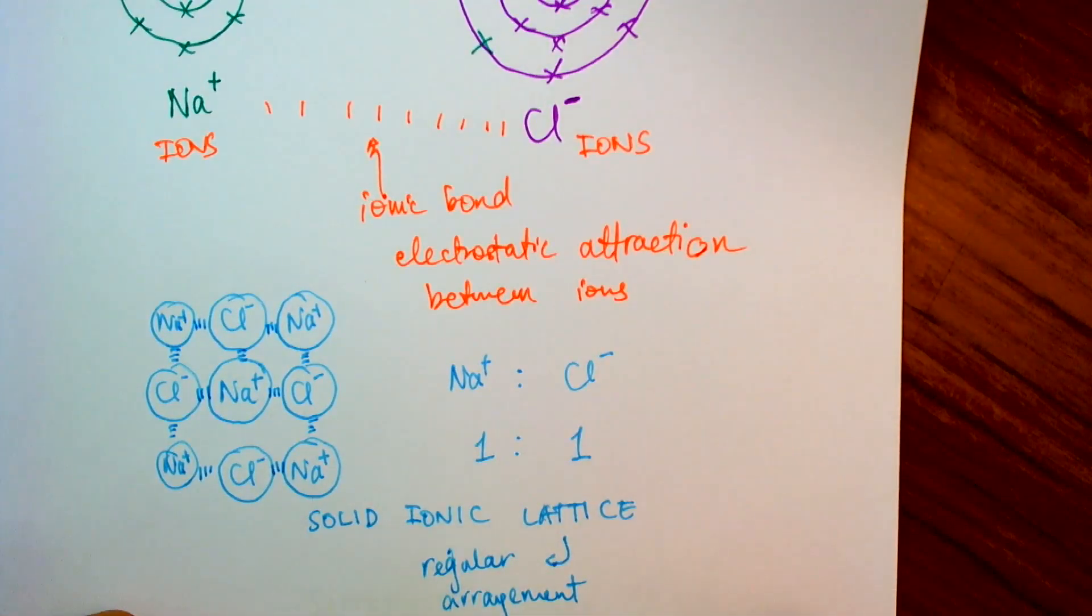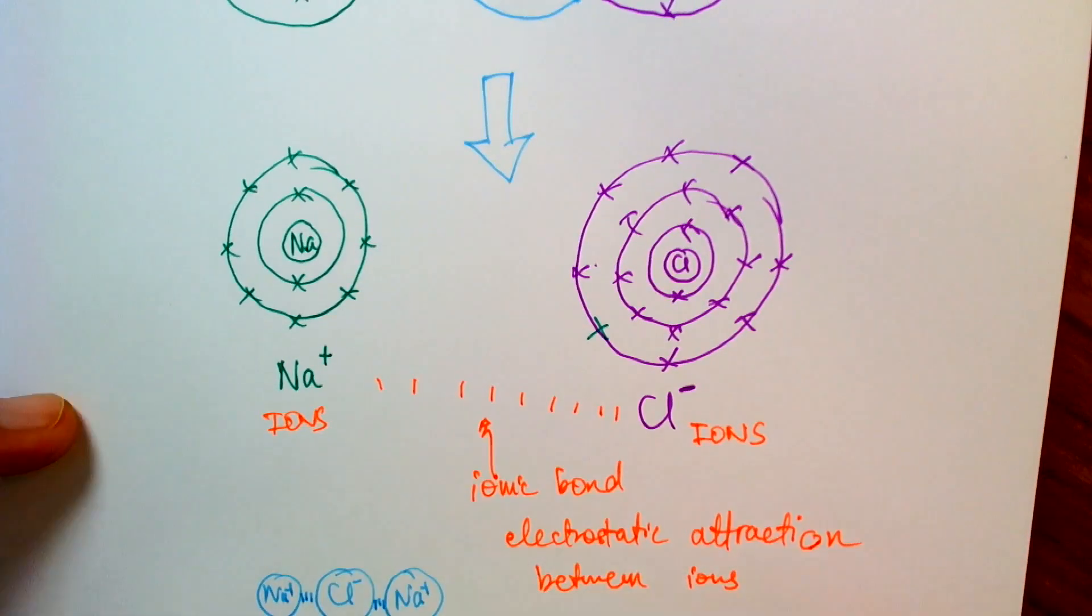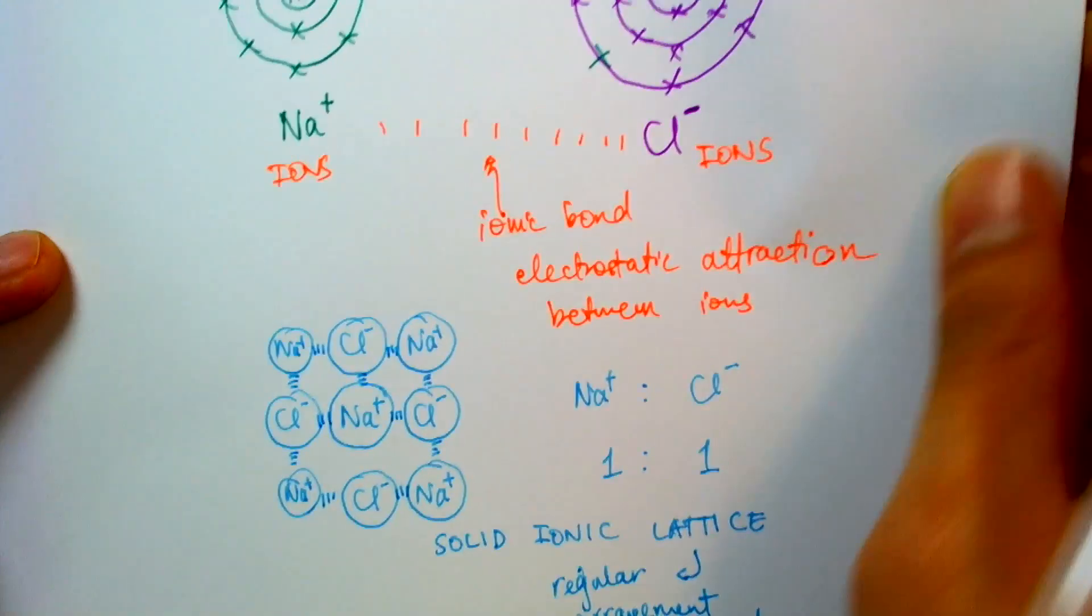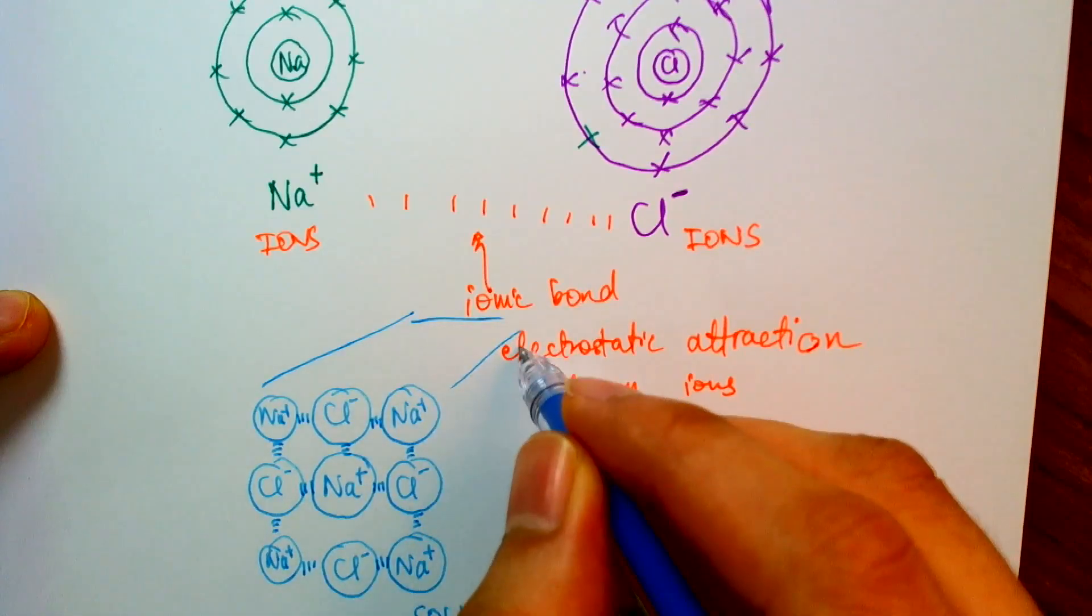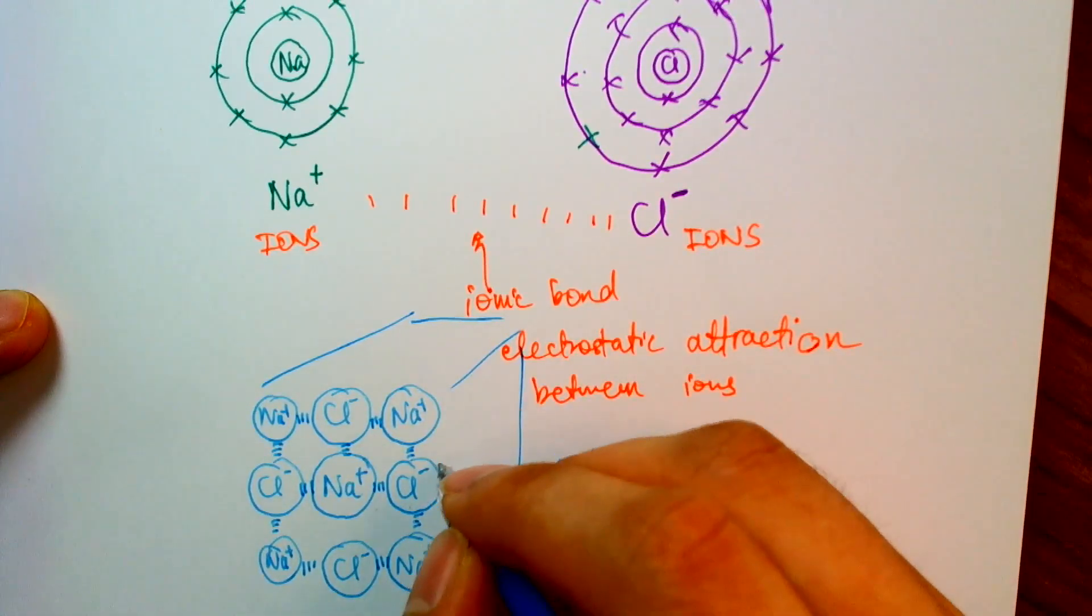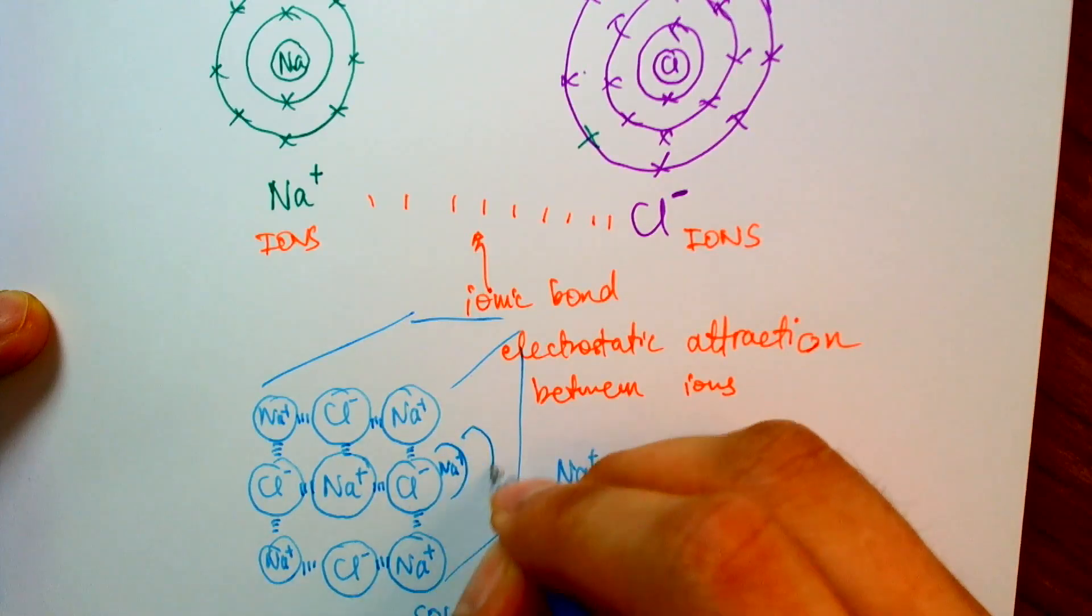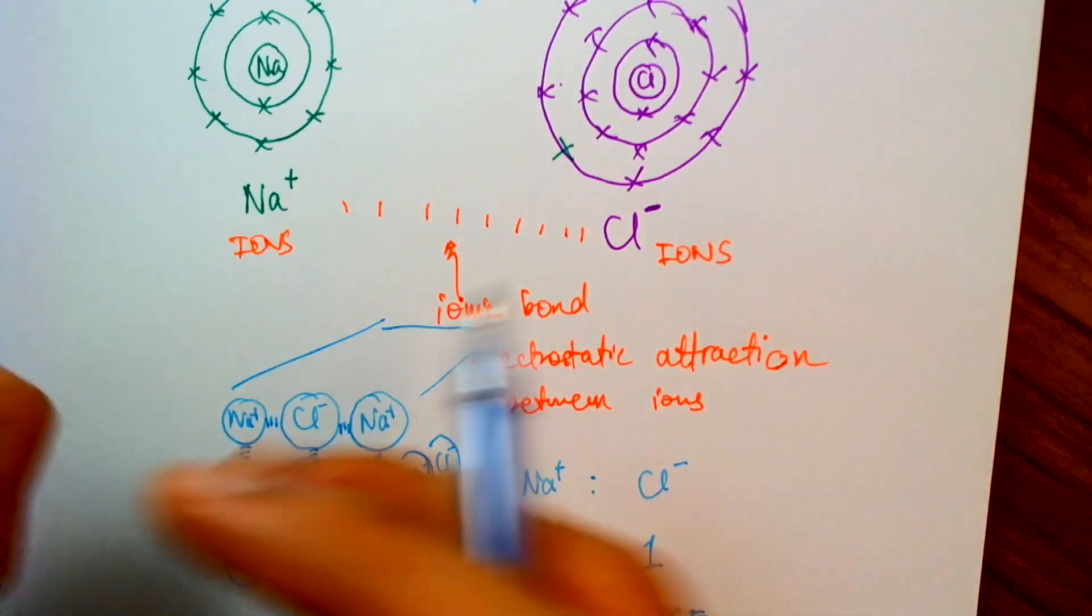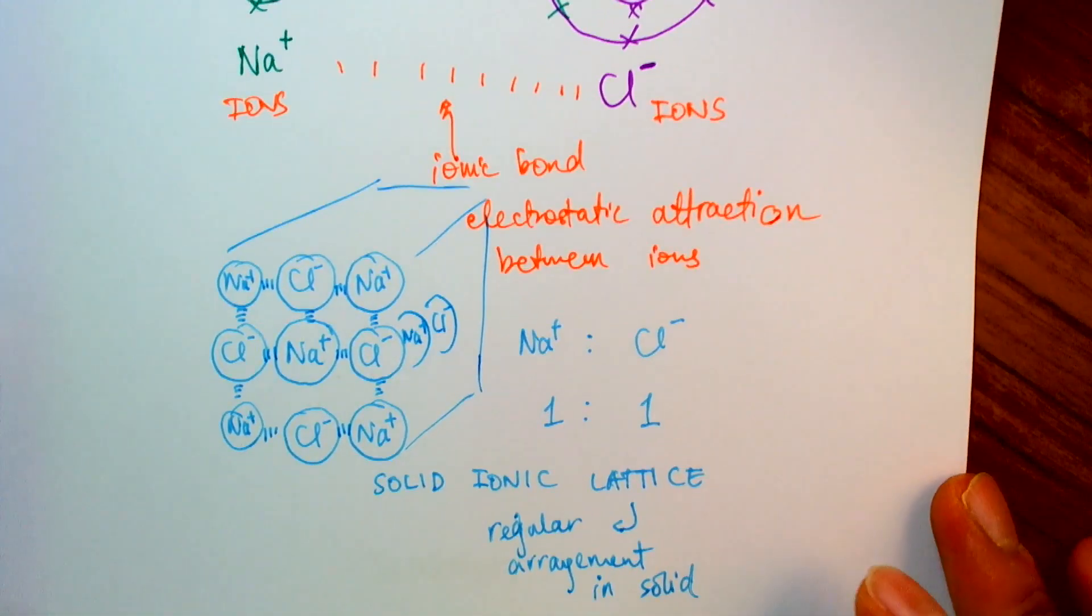And the lattice just means a regular arrangement of atoms or ions in a solid. So they tend to form this solid block. And you can imagine this might extend in three dimensions. So we have behind this chlorine, we'll have a sodium, and then a chlorine, and so on and so forth. So it will extend until we get a relatively large ionic lattice, and that would be what exists in our grain of salt.